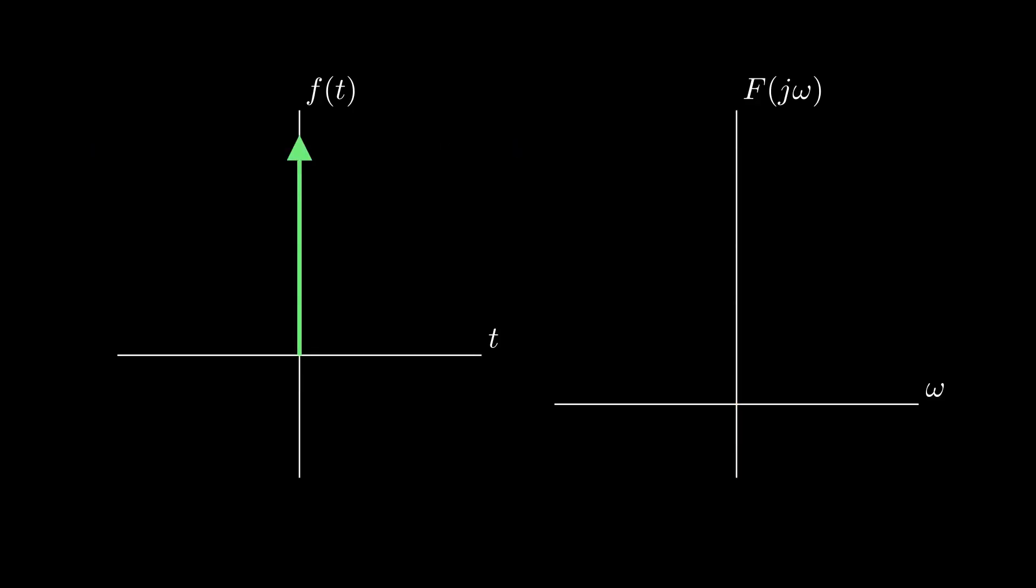On the contrary, if you concentrate all energy of this time domain signal into a Dirac delta pulse, the frequency domain will give you a constant.